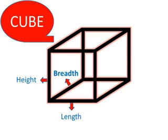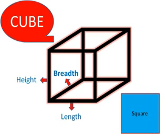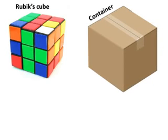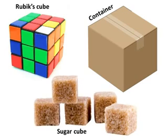Thus, each face of a cube is a square. So, children, you must have seen people playing with Rubik's, which is in the shape of a cube. Other examples include square container, sugar cube, etc. I'm sure you have enjoyed the video. Thanks for watching.